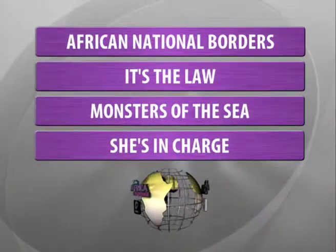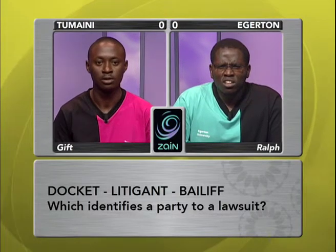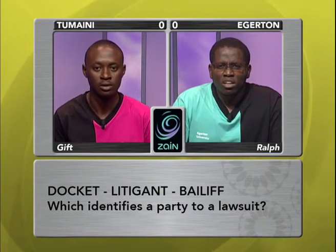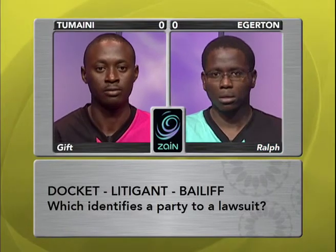Giving you 20 points. Docket, litigant, bailiff. Which identifies a party to a lawsuit? Edgerton? Bailiff. I'm turning it over to Tumayini. Litigant. That is correct.